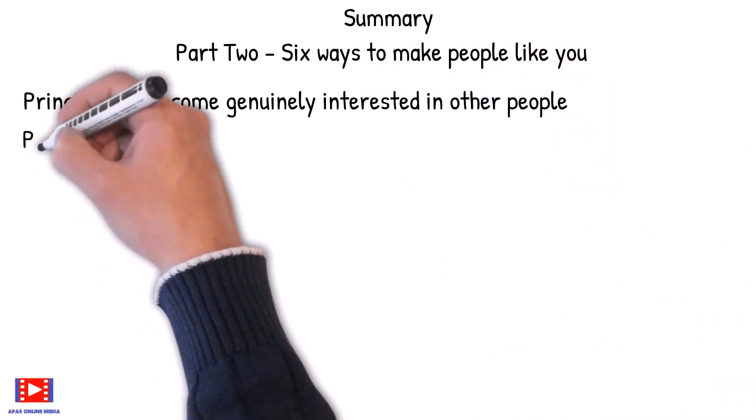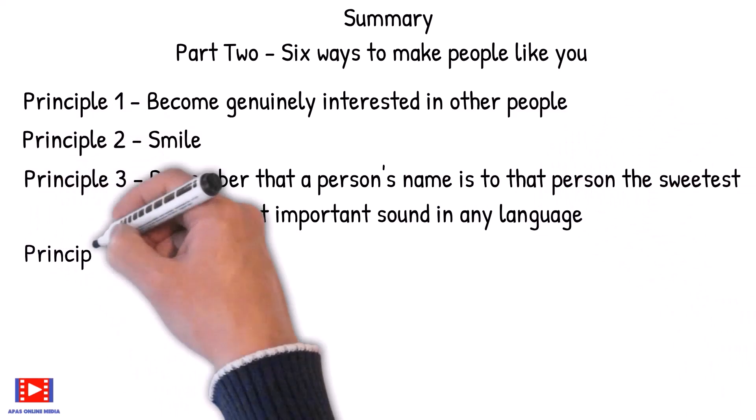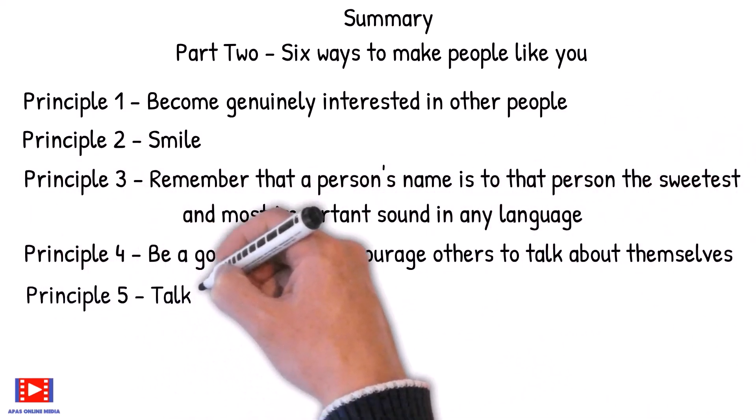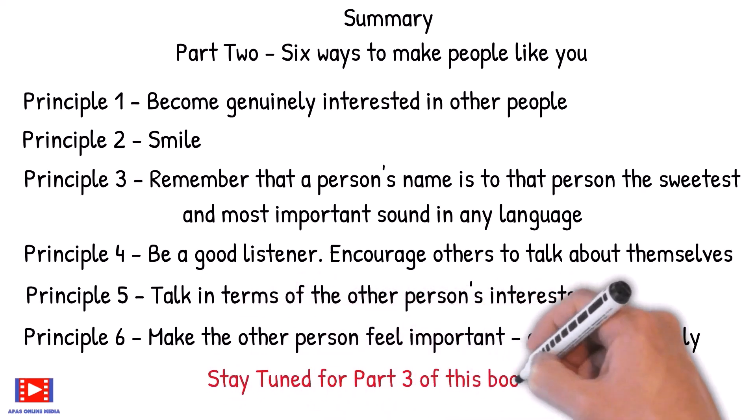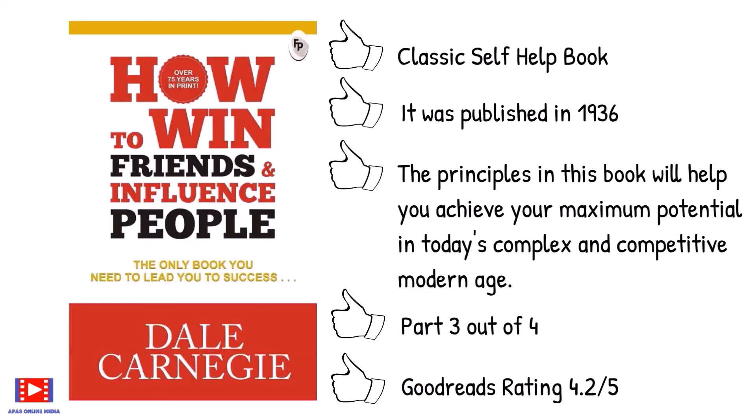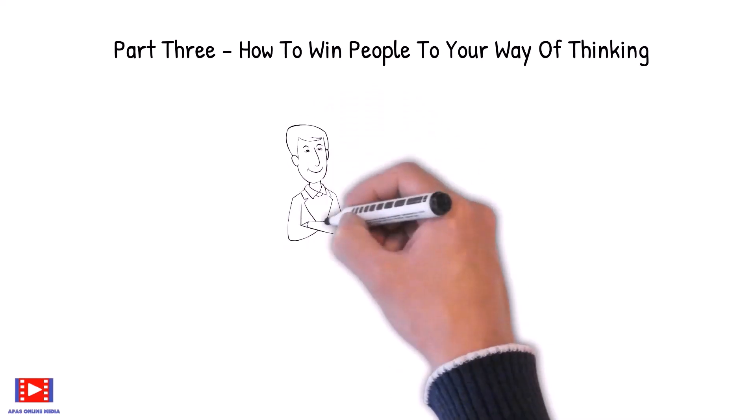Let's summarize what we have learned so far. Part 2: Six Ways to Make People Like You. Principle 1: Become genuinely interested in other people. Principle 2: Smile. Principle 3: Remember that a person's name is to that person the sweetest and most important sound in any language. Principle 4: Be a good listener, encourage others to talk about themselves. Principle 5: Talk in terms of the other person's interests. Principle 6: Make the other person feel important and do it sincerely.